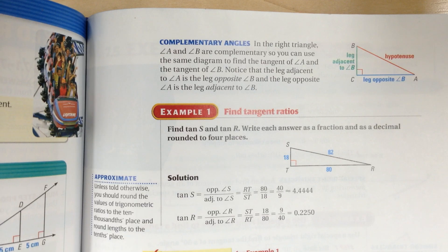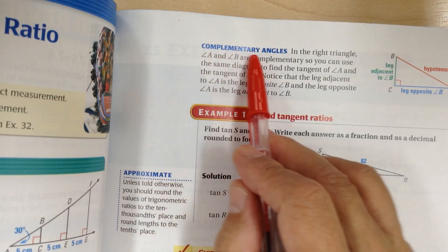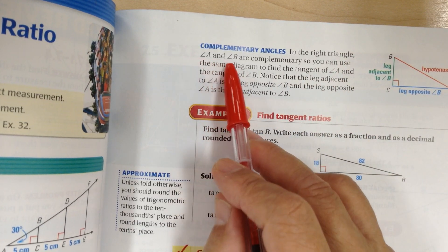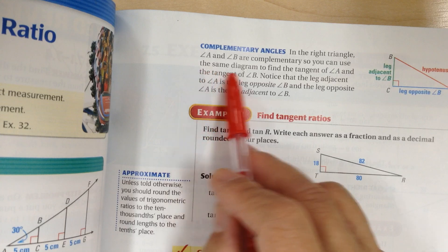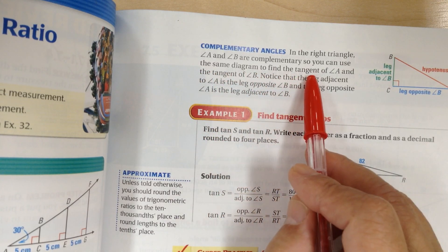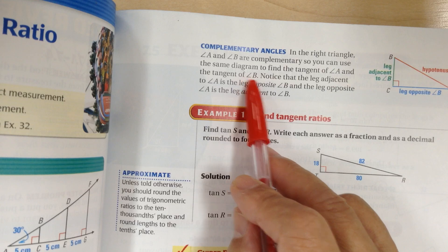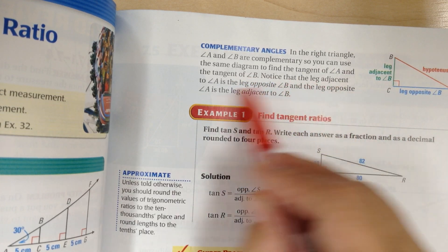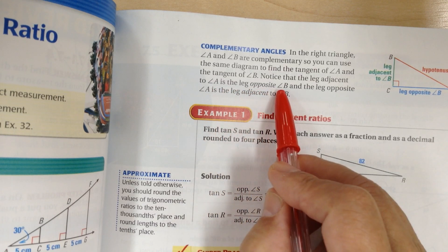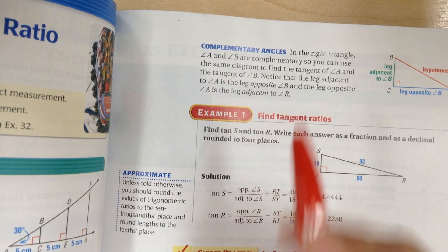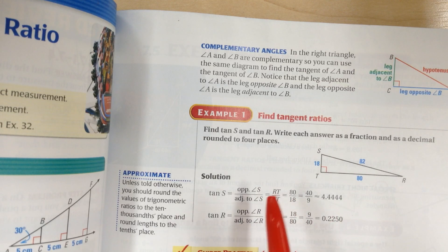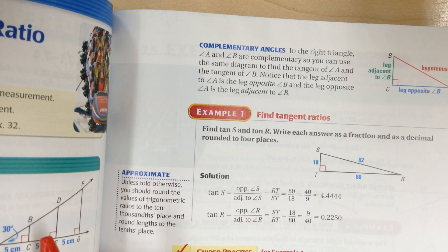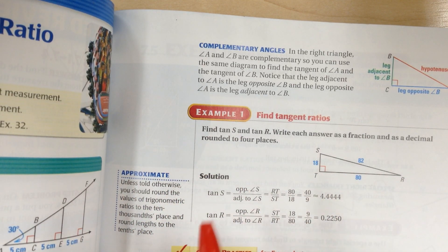Let's go to page 467. In a right triangle, angle A and angle B are complementary, so you can use the same diagram to find tangent of angle A and tangent of angle B. Notice that the leg adjacent to angle A is the leg opposing angle B. The key to remember: adjacent is touching the angle in the ratio, and the leg that does not touch is the opposite.